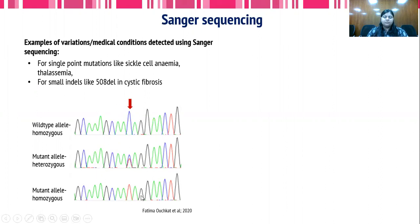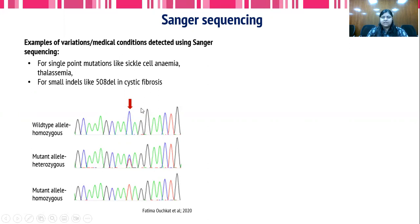This type of chromatogram can easily help us detect lone point mutations in case of sickle cell anemia, thalassemia, and cystic fibrosis. These types of diseases could be diagnosed using Sanger sequencing.